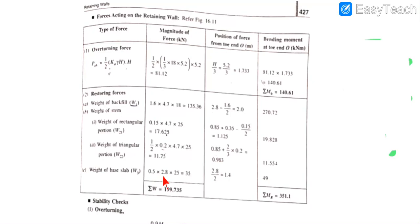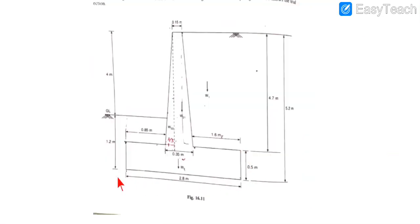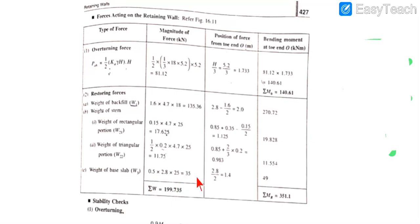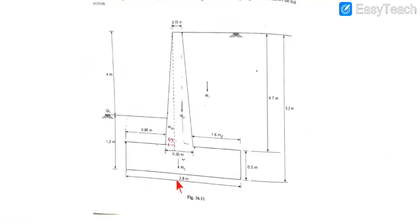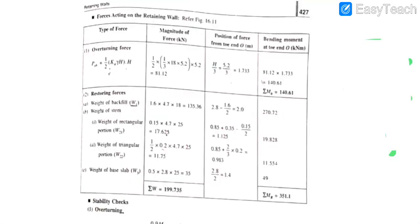The weight of the base slab W3 (or W_base) = 0.5 × 2.8 × 25 kN, acting at the centroid of the base slab which is 2.8/2 = 1.4 m from the toe. All these weights are compiled in a table with their distances to calculate the total stabilizing moment MR.